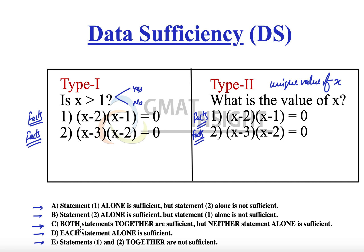It is always suggested that you remember these five options. A small acronym to help remember them in sequence is 'AB TEN': A — first alone is sufficient; B — second alone is sufficient; T — together they are sufficient; E — each alone is sufficient; N — not sufficient even after combining them together.